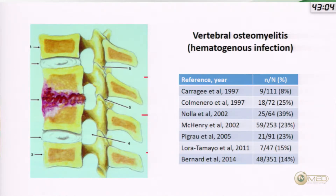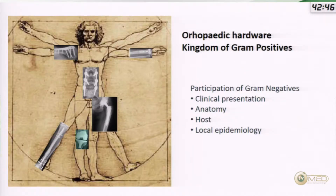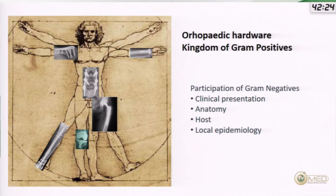There are some particular scenarios where we have to bear gram-negatives in mind. In hematogenous osteomyelitis, we have this more or less constant percentage of infection, around 10 to 30 percent, and this hasn't changed much in recent years. We probably face the problem of gram-negative infections when talking about orthopedic hardware-related infection — osteosynthesis and especially prosthetic joints — where the main role remains gram-positives, particularly staphylococci, but gram-negatives appear in particular scenarios depending on host, clinical presentation, and anatomy.